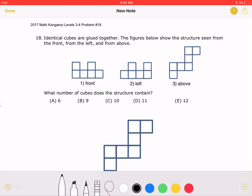This is the 2017 Math Kangaroo Levels 3-4, problem number 18. Identical cubes are glued together. The figures below show the structures seen from the front, from the left, and from above. What number of cubes does the structure contain?